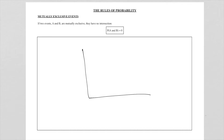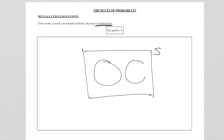If I draw a Venn diagram, always remember that is your sample space S, and I have two events A and B. Please take note: no intersection. That means the two events have nothing in common — there is no 'both' part. So this is event A and that is event B. These two events have nothing in common, and we say that the probability of A and B happening is zero.